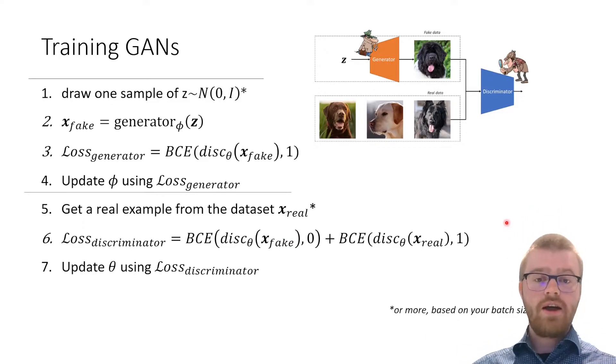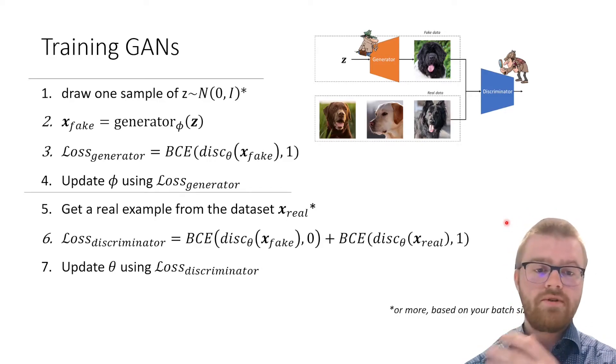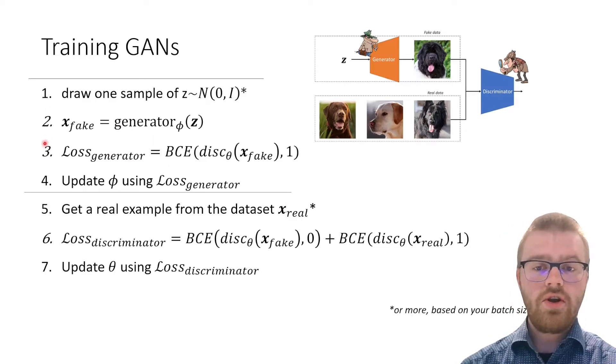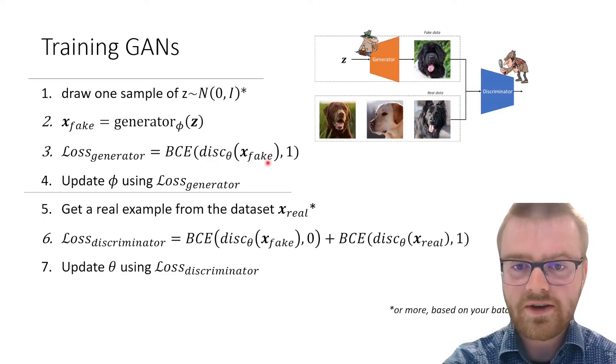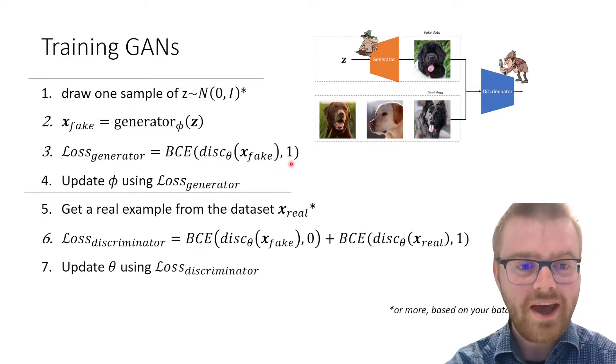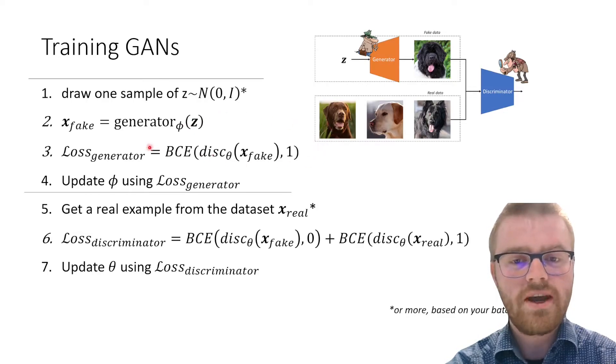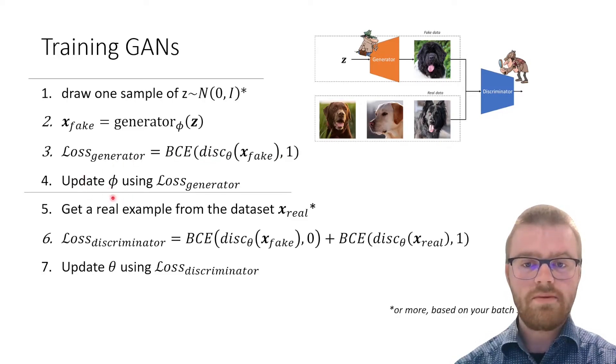Training a GAN is fairly straightforward. We draw one sample of Z, or maybe more if we have a larger batch size. Then the loss of the generator depends on the discriminator here. We train with binary cross entropy, but with the wrong label. We try to make it so that the discriminator thinks the label is actually real. And then we update phi, the parameters of the generator, based on this loss function.